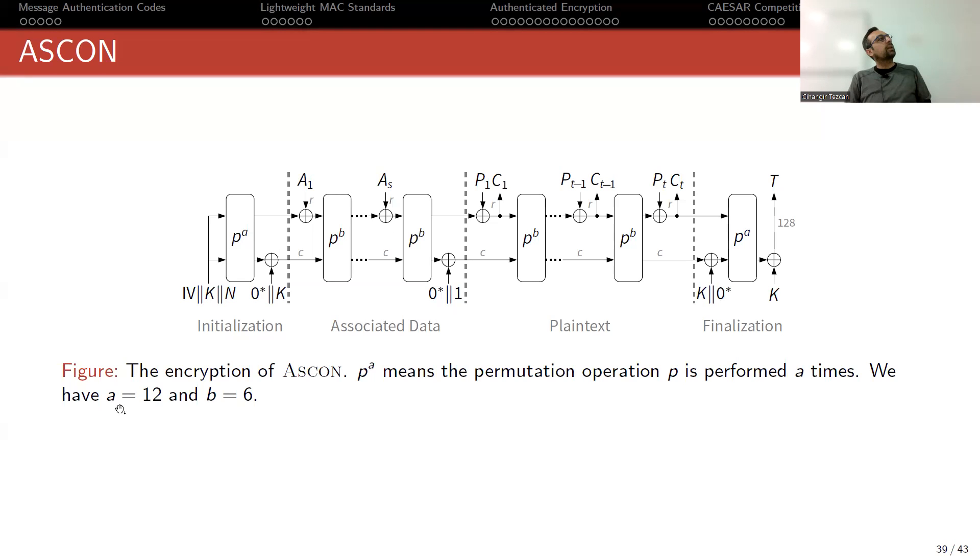You put it in this permutation, apply it 12 times to mix this internal state. Then if you have associated data, you XOR r many bits of your associated data with the top r bits of your internal state, then perform the permutation again, but this time 6 many times. You keep adding your associated data r bits at a time.